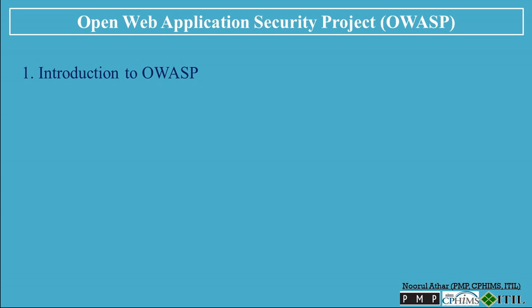OWASP's primary goal is to raise awareness about the security risks that web applications face, and they achieve this by providing open standards, best practices, and educational resources to help developers create secure applications. The most notable project by OWASP is the OWASP Top 10, which we'll discuss in detail later.